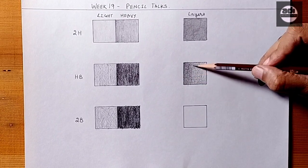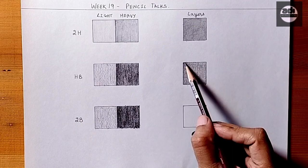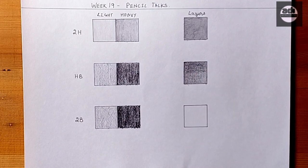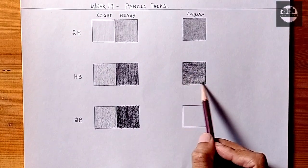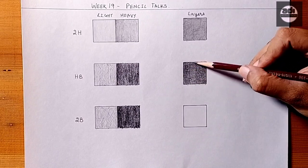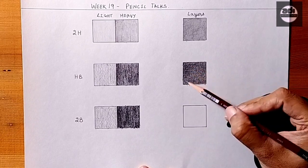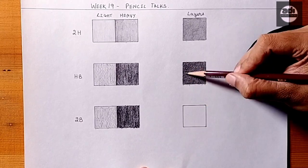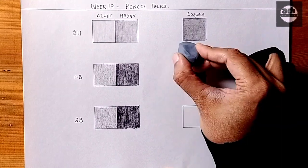Then you will shade one square with each pencil and get the darkest value possible by layering, no pressing hard. Keep applying layers of graphite one over the other to get the darkest value possible with that particular pencil. You will do this for all three pencils: 2H, HB, and 2B.